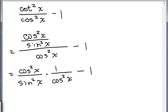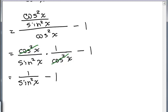Yep, this looks like I'm going to get something more interesting. My cosine squareds cancel, and that gives me 1 over sine squared x minus 1.